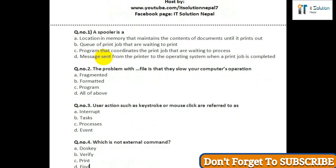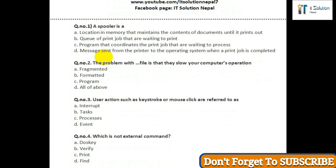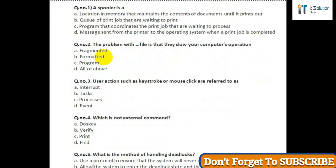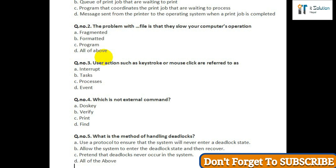Question number four: Which is not an external command — option A: dot key; option B: verify; option C: print; option D: find. Question number five: What is the method of handling deadlocks — option A: use a protocol to ensure that the system will never enter a deadlocked state;